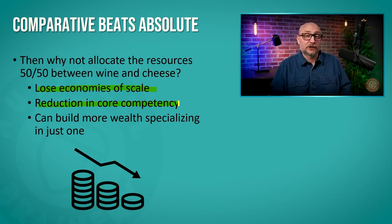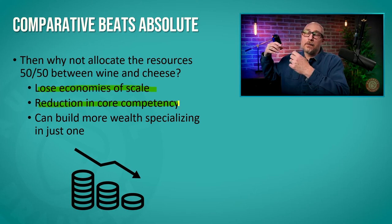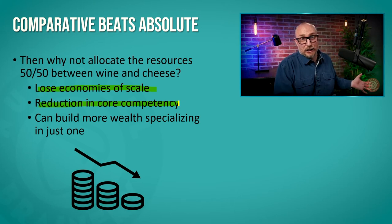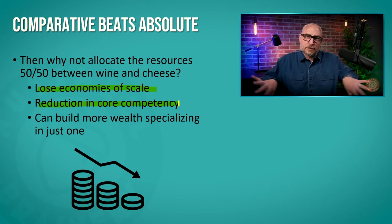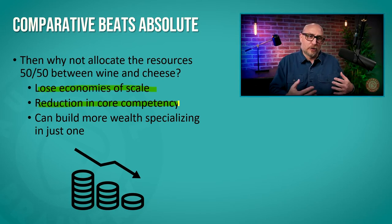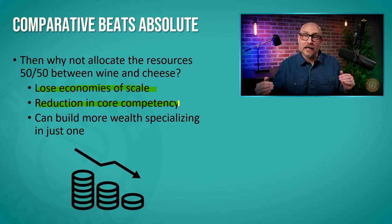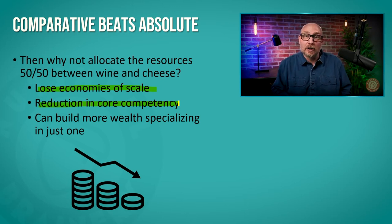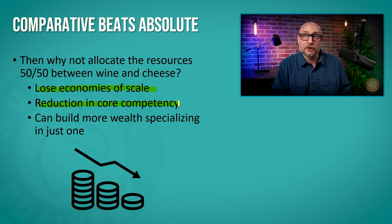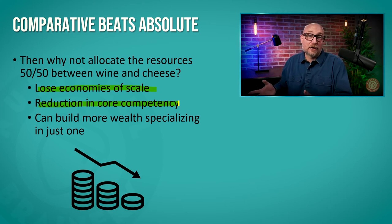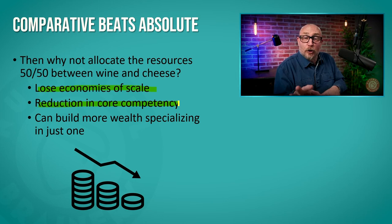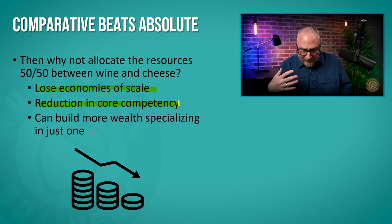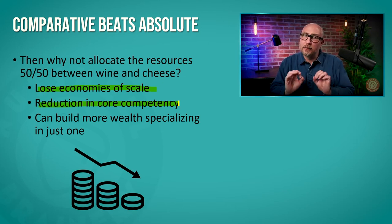Another issue is you'll have a reduction in core competency. You might be really good at making wine, but excellent at making cheese. If you spread your competency, your ability to make really high-quality cheese and wine will degrade because you're spreading yourself too thin. Think about what you do in your own life — you do two or three things really, really well, and that's what people pay you to do. You just want to get really, really good at one thing.